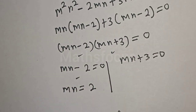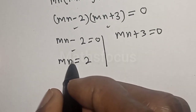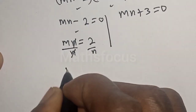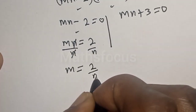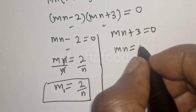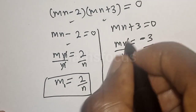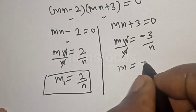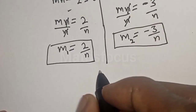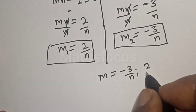From Case 1: mn = 2. Since we are solving for m in terms of n, we divide both sides by n, giving m₁ = 2/n. From Case 2: mn = -3. Dividing both sides by n gives m₂ = -3/n. Therefore our final answers are m = 2/n or m = -3/n.